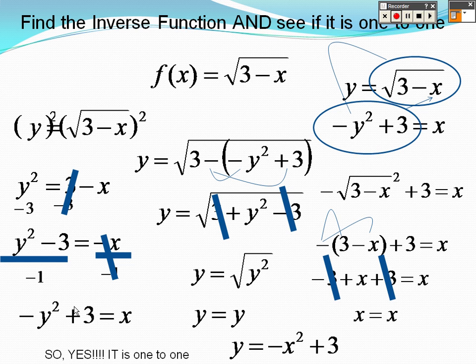So it happens to be one-to-one, and the inverse is that right there. Yes, it is one-to-one. The actual problem is the inverse. Notice how I just switched those around, because you can't graph x equals something. The inverse is y equals negative x squared plus 3. You've got to remember to plug the x and y back into each other.